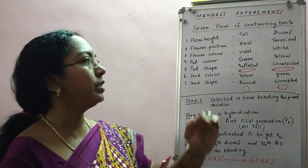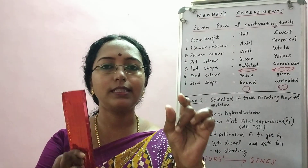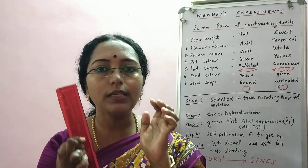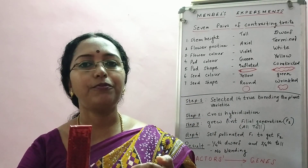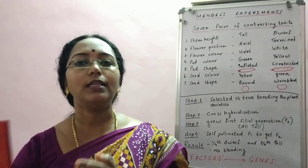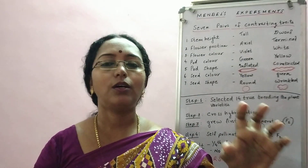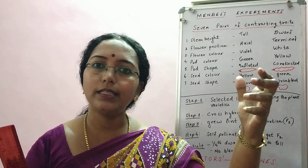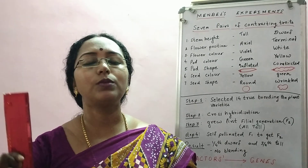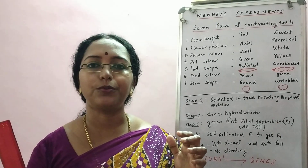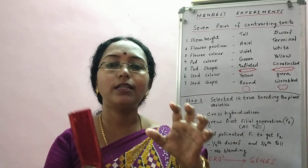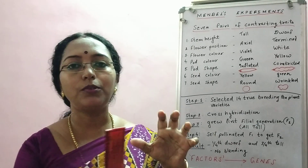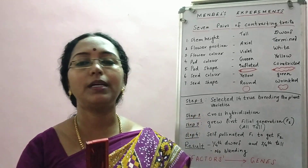He did this for all seven characters — each time keeping one character different and the rest similar, performing cross hybridization to get F1, then self-pollinating F1 to get F2. For all seven varieties he got the same ratio in F2: three of one character and one of the other. The character expressed in F1 was always more in number in F2, and the one suppressed in F1 was always less. This is the importance of statistical analysis and mathematical logic — it allowed him to draw general conclusions.